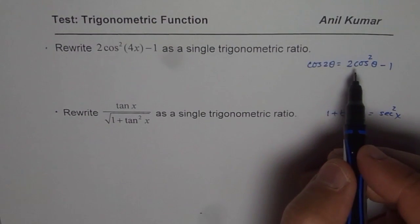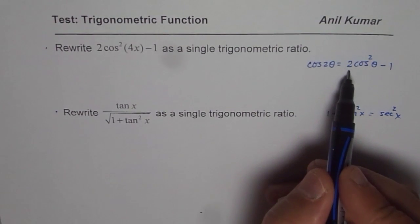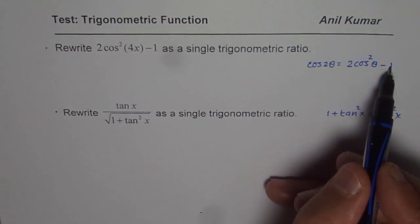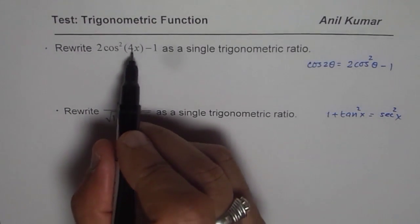Now let us begin solving these equations. I will use this formula cos 2θ = 2cos²θ - 1. And in our case, what we have is that θ = 4x.